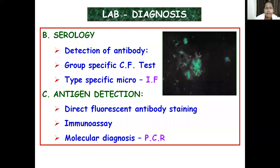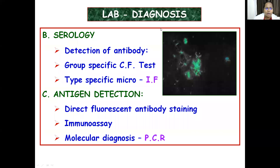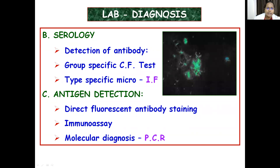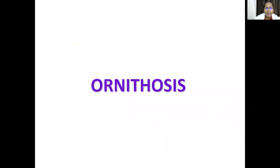Various serological tests are done: for group-specific antigens, complement fixation testing is done; for type-specific antigens, micro-immunofluorescence is done. For antigen detection, direct fluorescent antibody staining, immunoassay, and molecular diagnosis by PCR are used. This concludes Chlamydia psittaci.